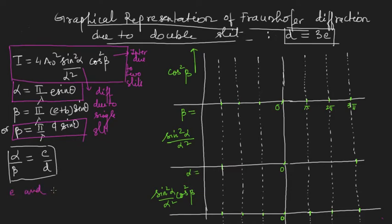From these two relations we saw that there is a relation between α, β, e, and d — so e and d are not independent. This is a very important point to note: e and d are not independent. Let us take a special case and try to see what the intensity distribution would look like graphically. I have taken the special case d = 3e, so the distance between the two slits is three times the slit width.